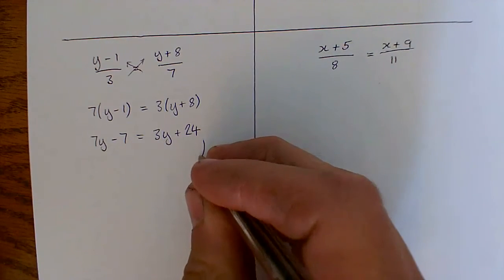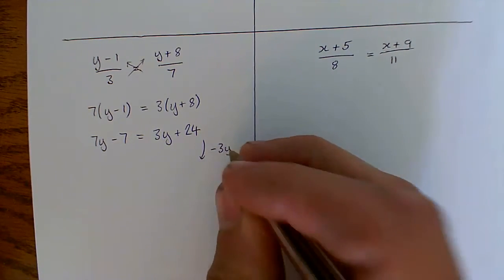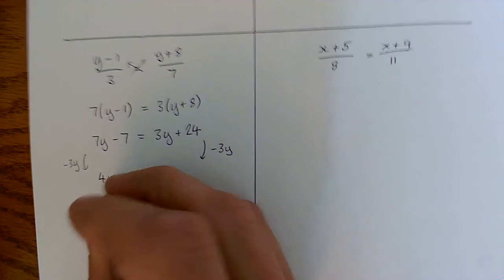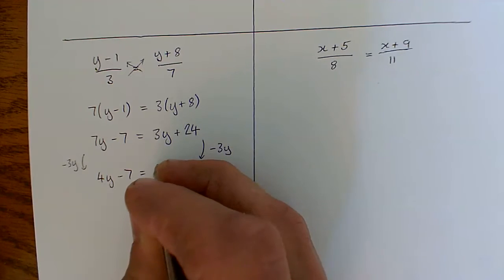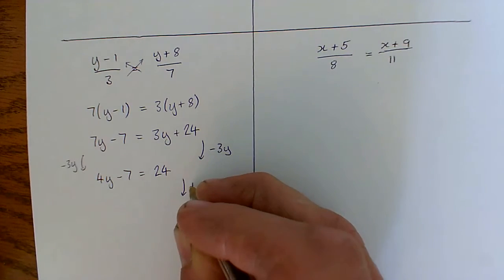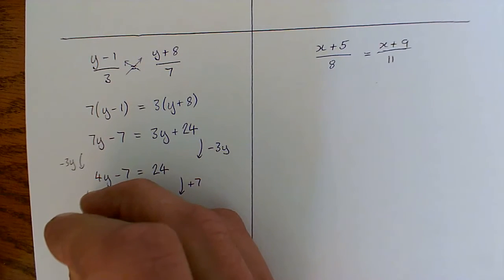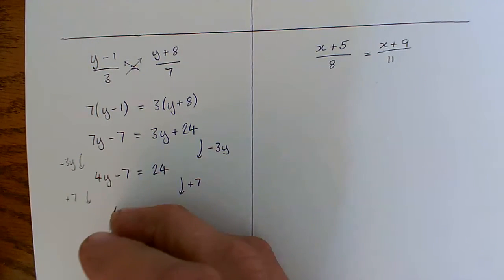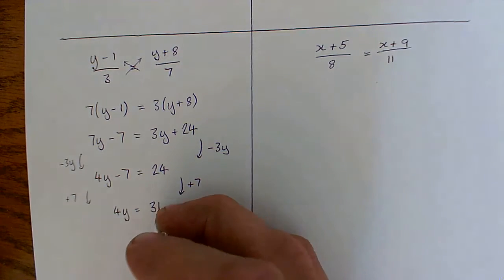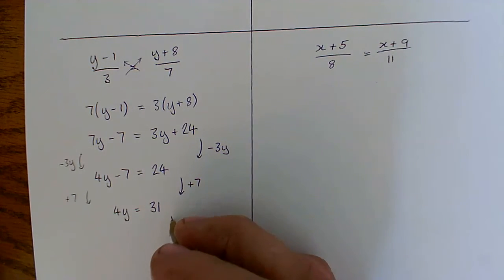So we get 7y minus 7 equals 3y plus 24. Now I can start solving. So now I'm taking 3y from both sides. That leaves us 4y minus 7 equals 24. Deal with the minus 7 now. Add 7 to both sides. We'll get 4y equals 31. And finally divide by 4.